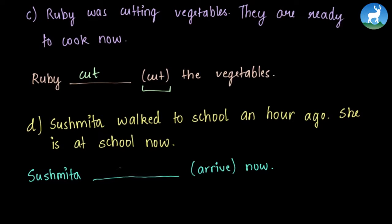Sushmita walked to school an hour ago. She is at school now. So this event of Sushmita walking to school occurred in the past and is now over. So Sushmita arrived now. The correct form of verb for arrive will be Sushmita has arrived now.